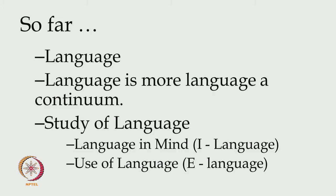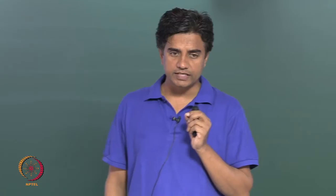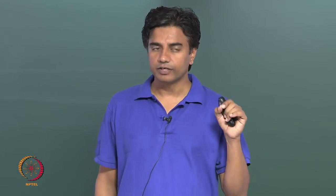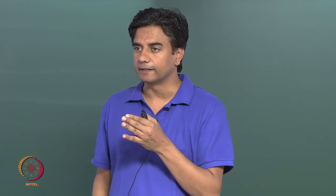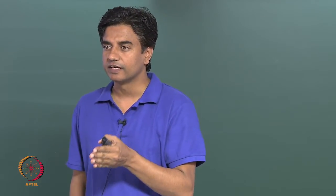So far, we have looked at language, where, while talking about various aspects of language and its generic features, I was trying to make you see a particular point about language, which is it is more like a continuum than like definite numbers, for the particular reason that there are not specific boundaries defined at one place where one stops and then the other begins.